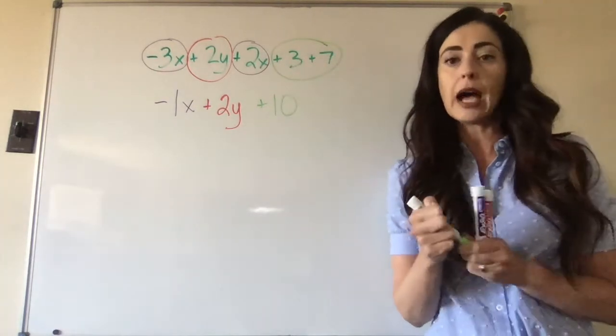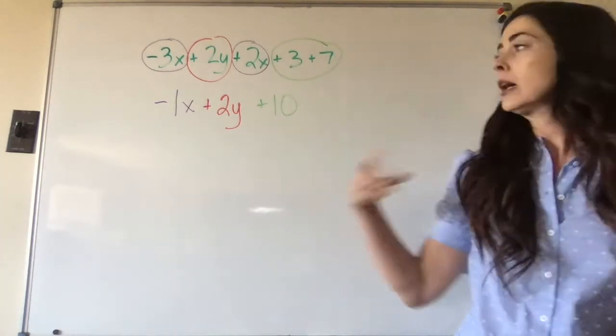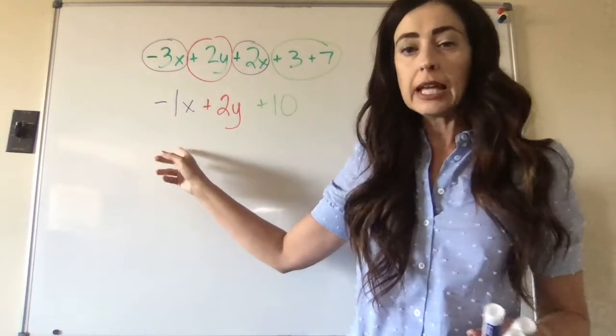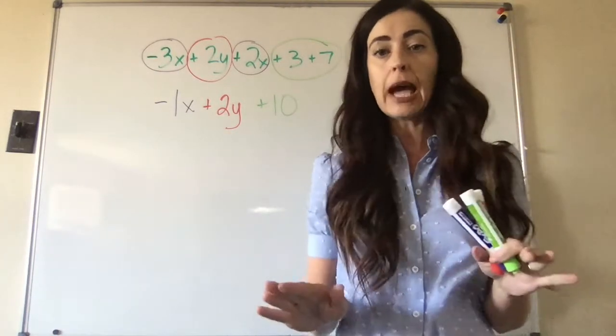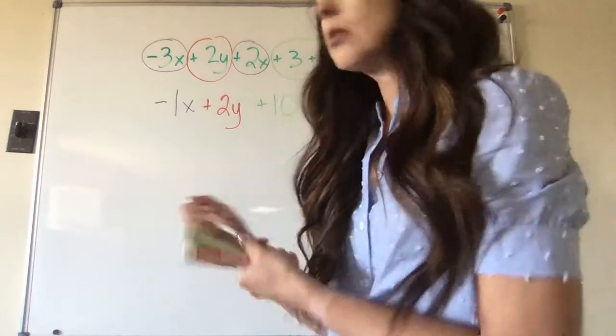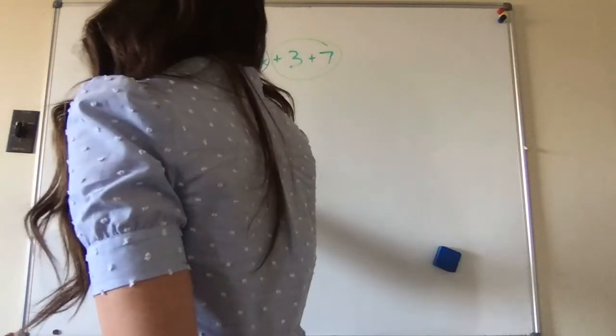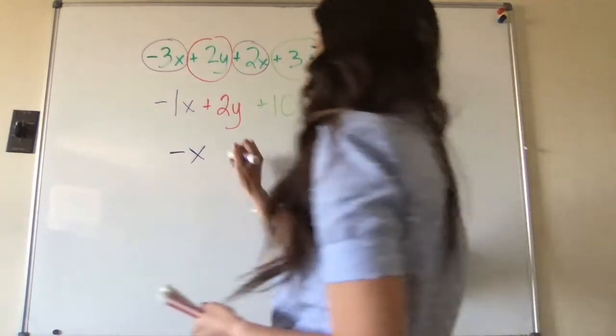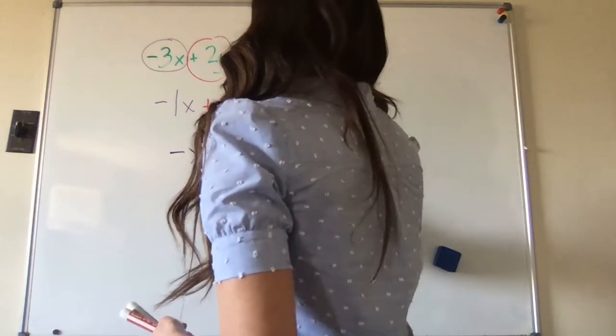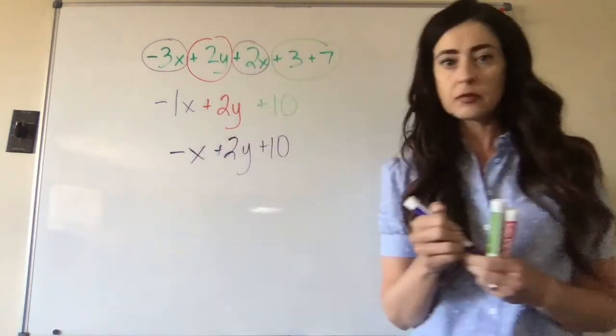So that would be simplest terms. Now, as you move forward in algebra, when you have a variable and you only have one of them, you don't have to list the number 1. So the way that you're going to start writing these is negative x. We don't have to add the 1. Plus 2y plus 10.